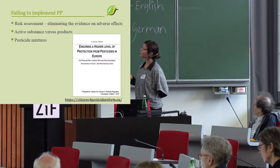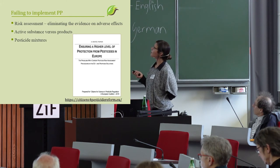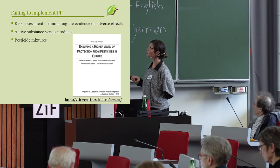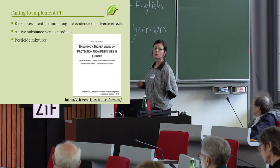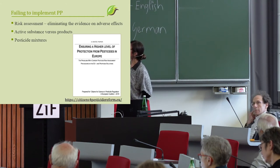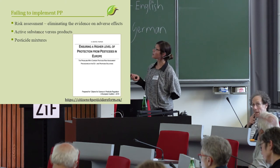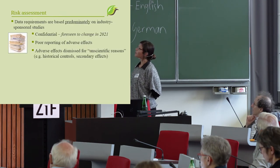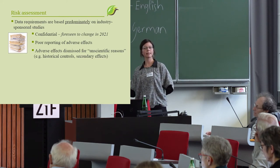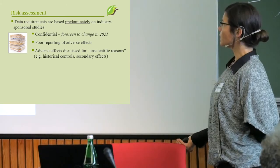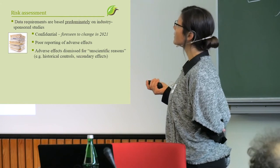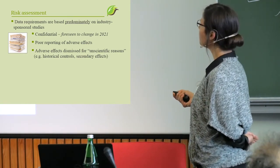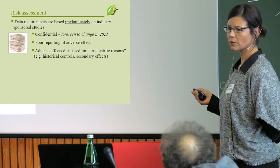I will give three examples of how this is happening. I invite you to look at our white paper, which documents many more problems with the current pesticide regulation. The three examples I will focus on are: risk assessment, the assessment of active substances versus whole products, and pesticide mixtures. The assessment is based on a set of data requirements all consisting of industry-sponsored studies, which are confidential — though that will change in 2021 with a modification of the General Food Law.